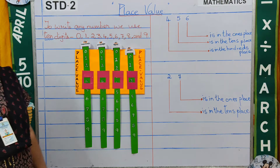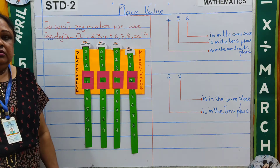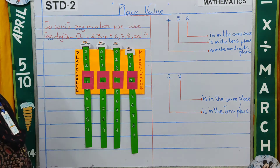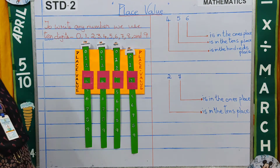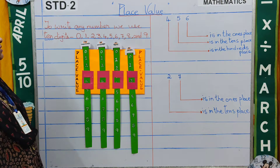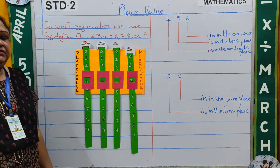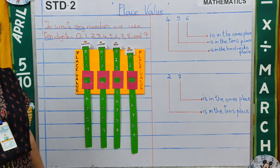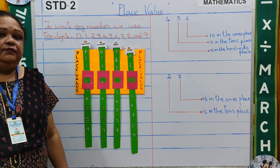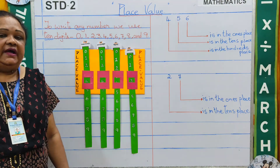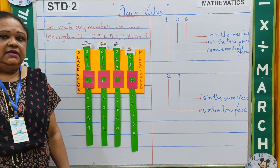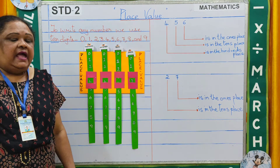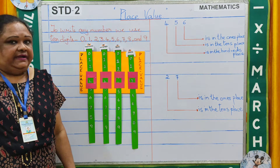First of all, we must know that to write any number we use 10 digits. That is 0, 1, 2, 3, 4, 5, 6, 7, 8 and 9.